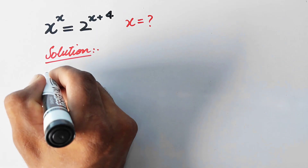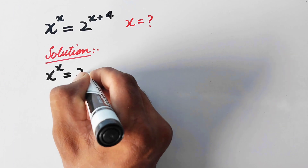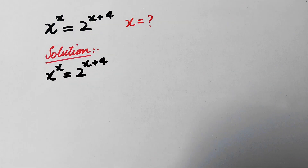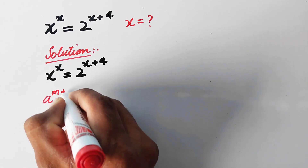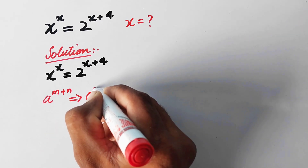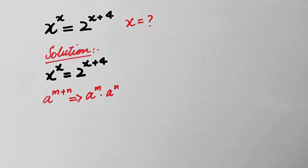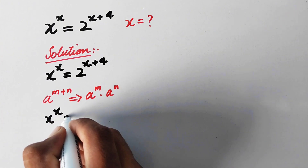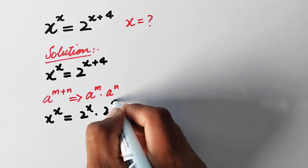Here we will write x raised to power x is equal to 2 raised to power x plus 4. Here we can apply a rule of exponents: a power m plus n can be written as a power m times a power n. So now we can write x power x is equal to 2 power x times 2 power 4.